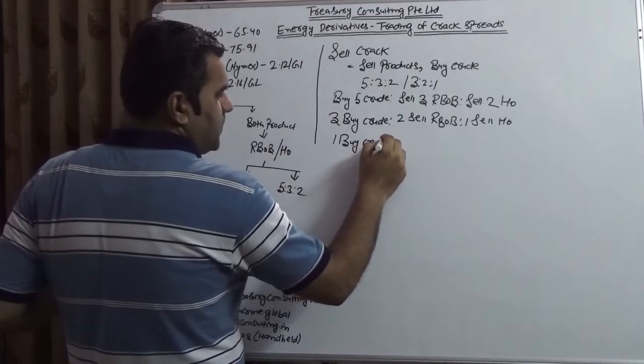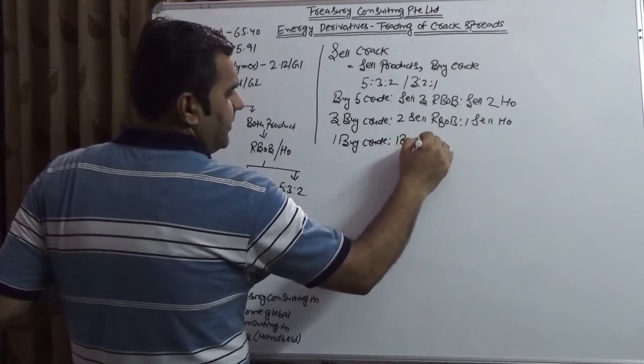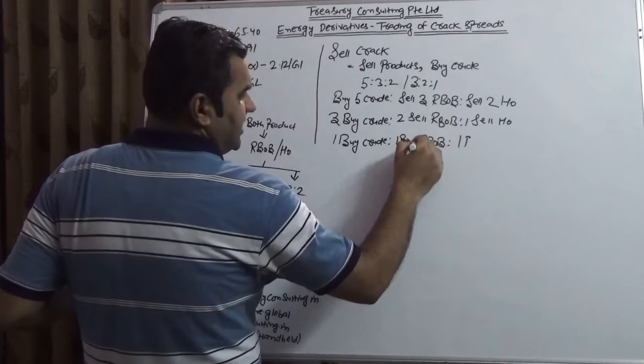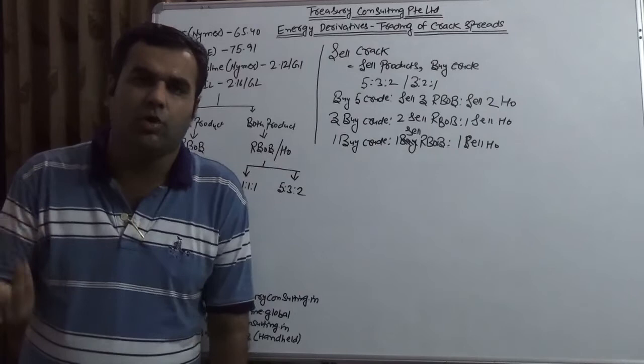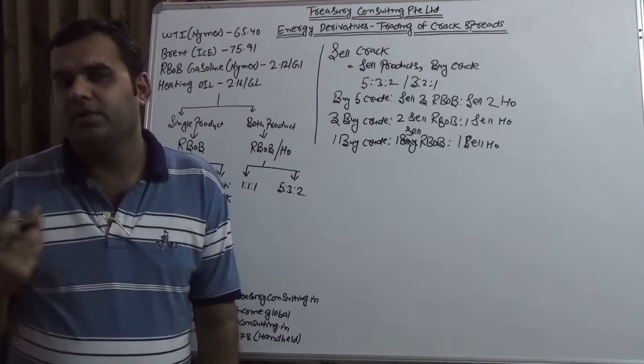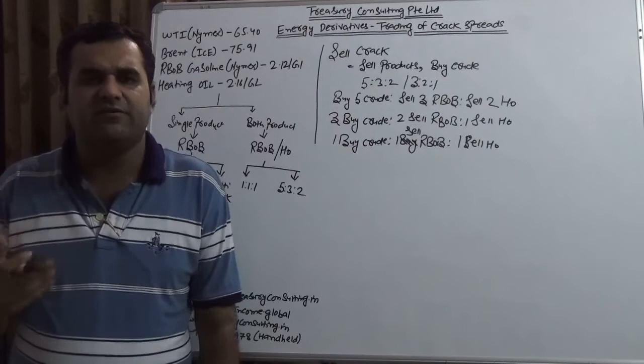In the 1-to-1-to-1 approach, they are doing 1 buy crude, 1 sell RBOB, and 1 sell heating oil. There are multiple compositions. As I told you, we have approximately 300 types of crude oil generating from the earth, so it is very difficult to have a common crack. Big companies like ExxonMobil, PetroChina, and Petrobras are taking different cracks.